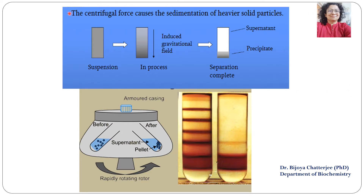To explain sedimentation: a tube filled with a suspension is placed inside the centrifuge machine rotor. When the machine rotates about its axis of rotation, particles inside will face the gravitational field, and separation occurs, leading to the formation of different layers. The upper liquid layer is called the supernatant, and the solid particles sediment downwards, known as the precipitate.